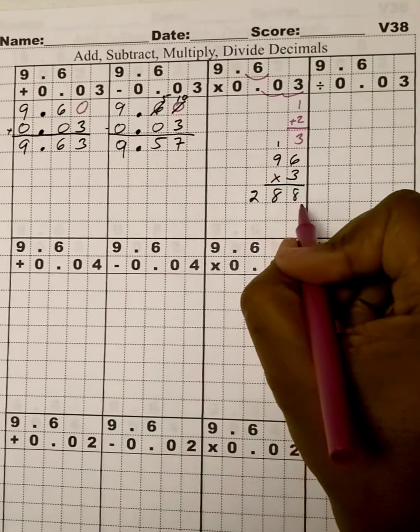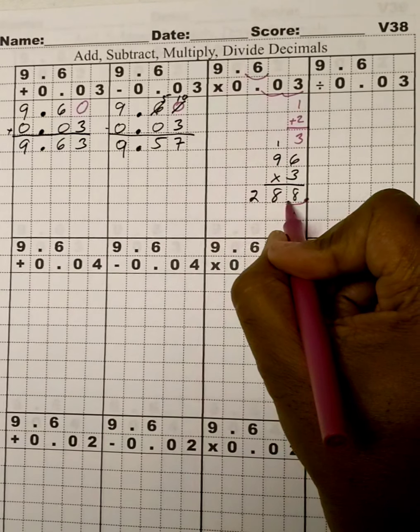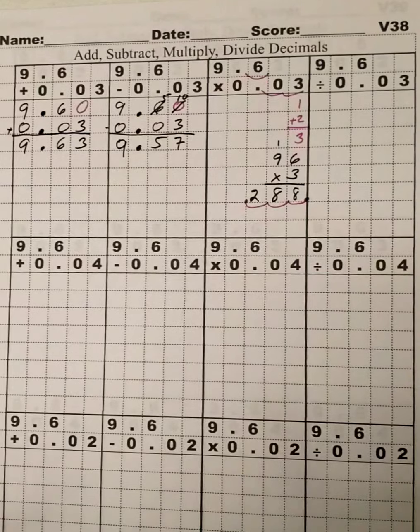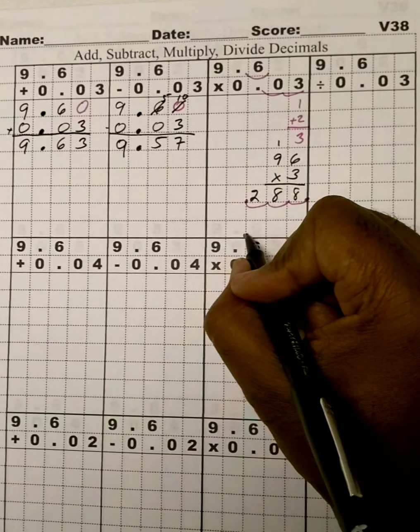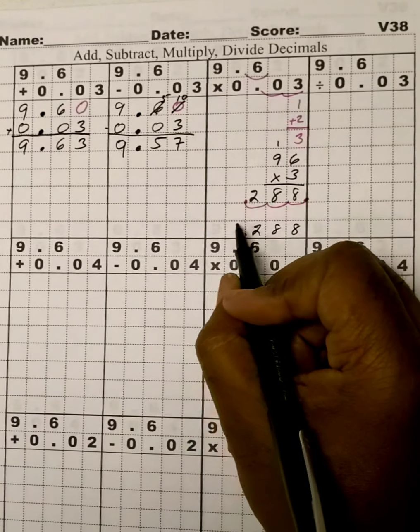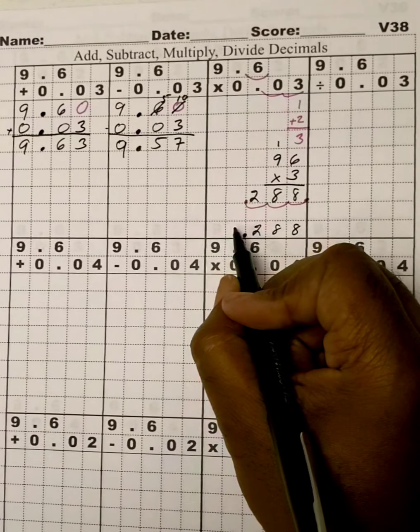So, let's count 3 decimal places. So, starting from here. 1, 2, 3. So, our final answer would be 0.288. And usually, with a decimal, I fill in the ones with a 0.